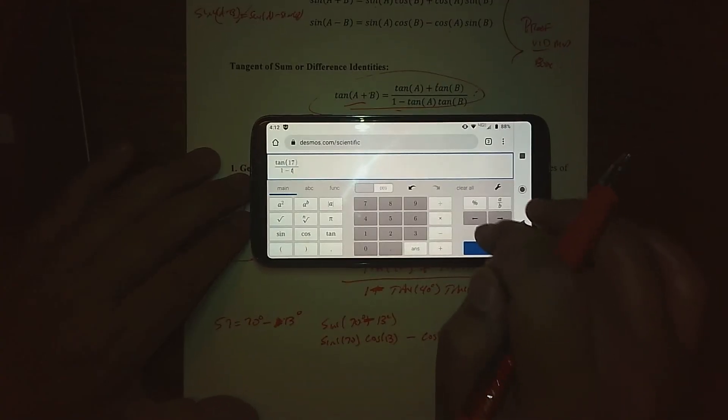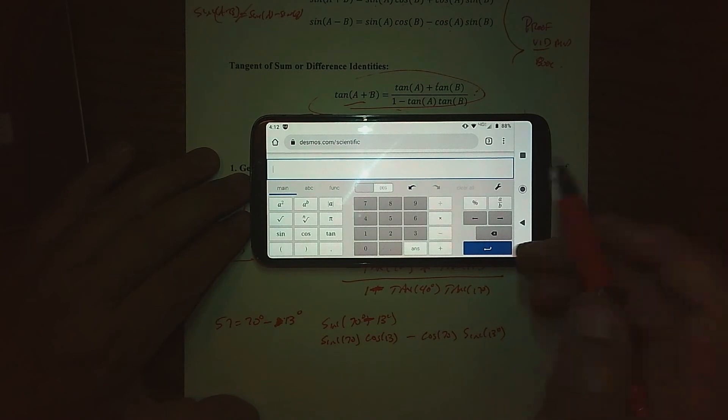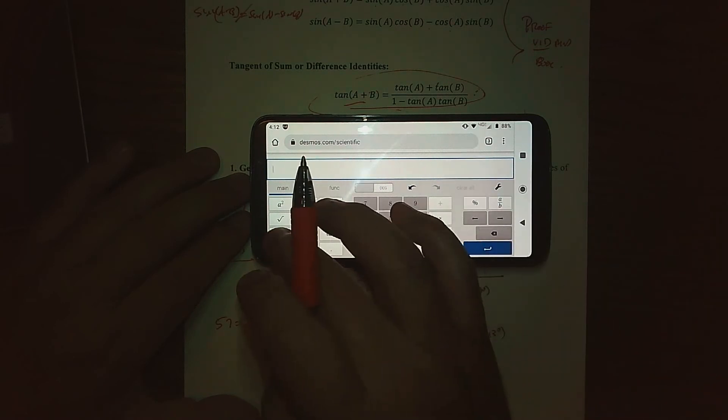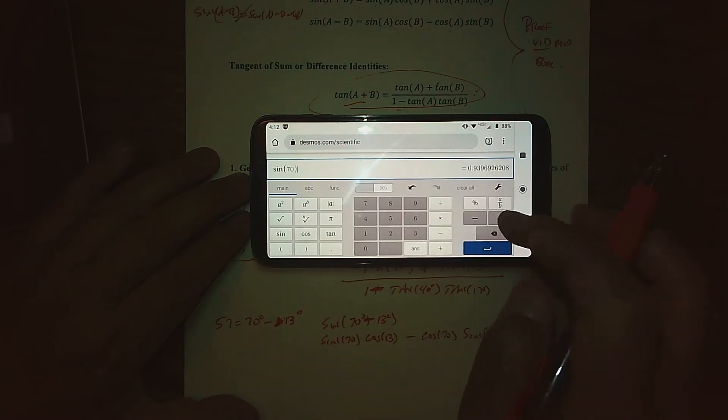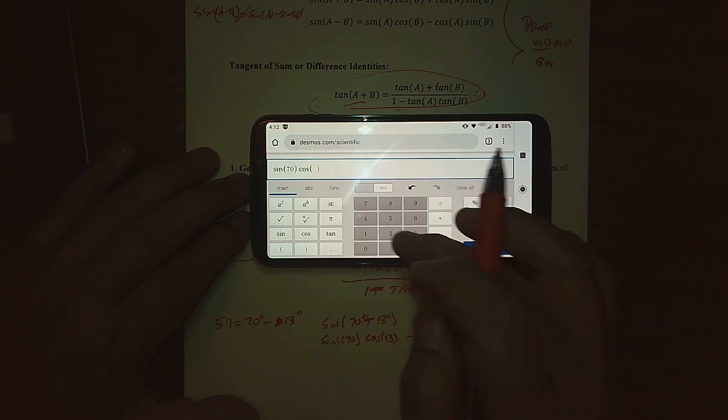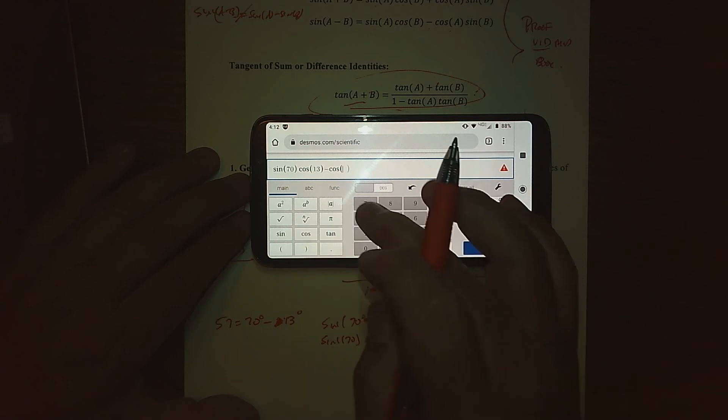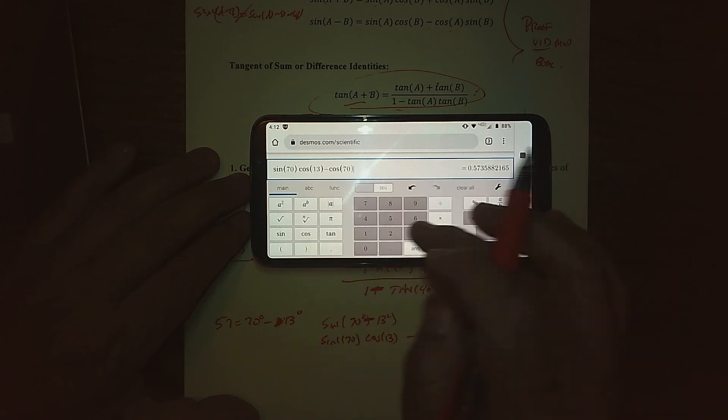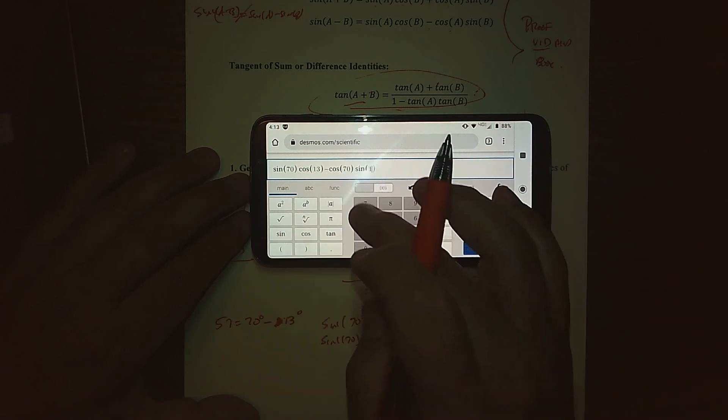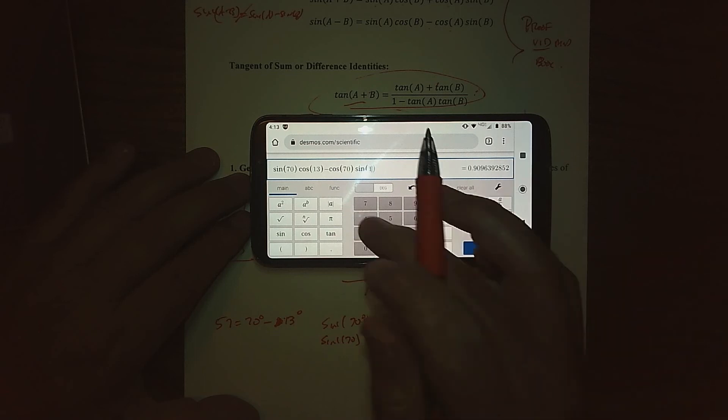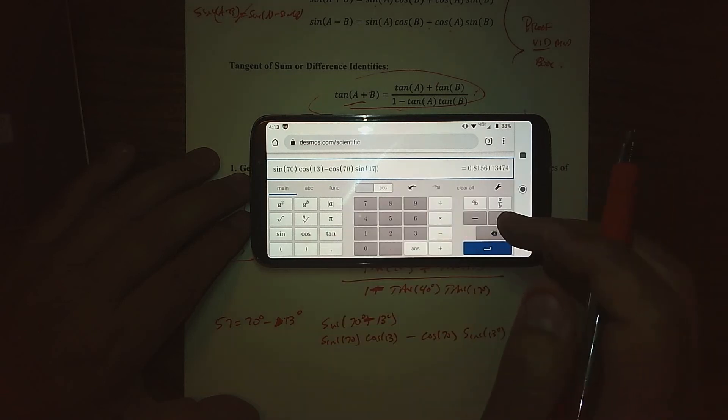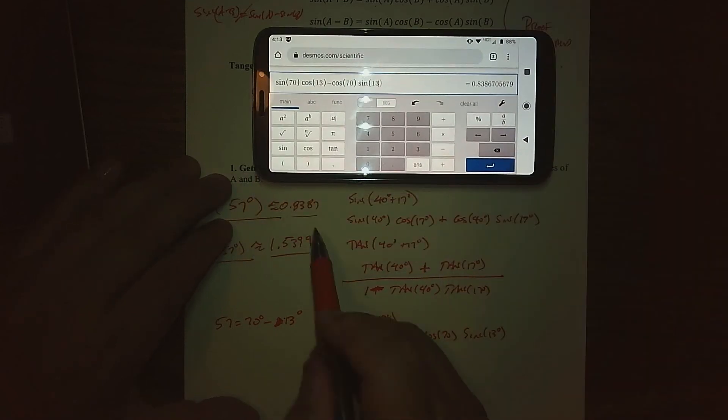And we'll type in the sine stuff for 57 degrees as a subtraction. So we got the sine of 70 and the cosine of 13. And we're going to subtract the cosine of 70 and the sine of 17. It was 13, what am I thinking? I'm thinking of the last problem. 13. And so there you go. Same decimal value that we got before. So 0.8387.